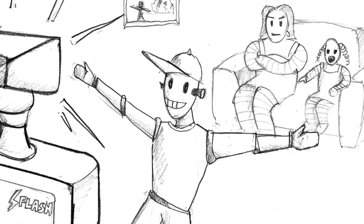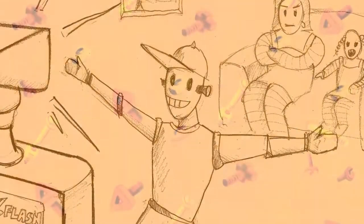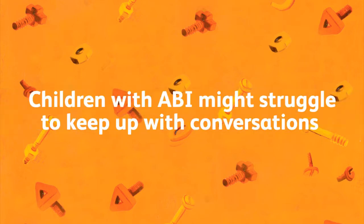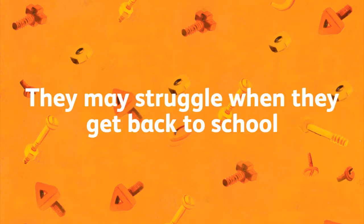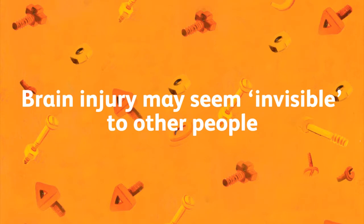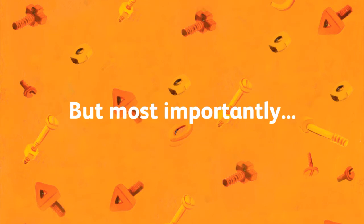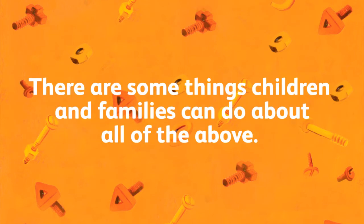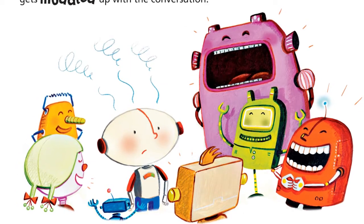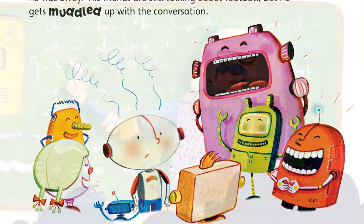We knew the story needed to include these important points about brain injury: children often feel tired or fatigued; children with ABI might struggle to keep up with conversations; they may struggle when they get back to school; relationships with their siblings may be under strain; and brain injury may seem invisible to other people. But most importantly, we wanted to say that there are some things children and families can do about all of the above. We also knew our book had to be fun for children to read, or they wouldn't be interested in the book at all.